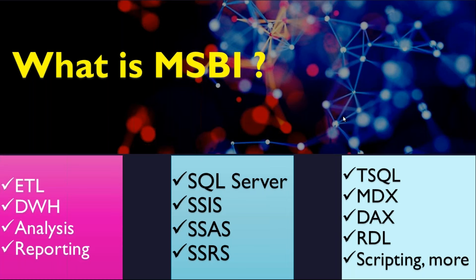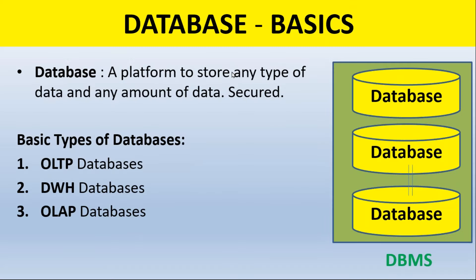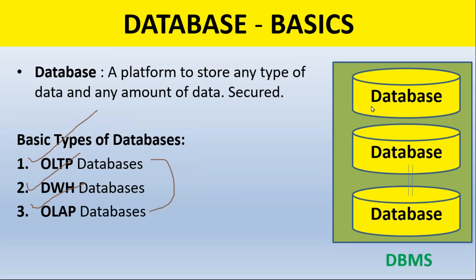Now, in reality, to understand more about the actual course, we need to first start with a database — a platform to store any type of data, any amount of data, fully secured. There are three basic types of databases: live data storage OLTP, historical data storage warehouse, and aggregated analytical data storage OLAP — Online Analytical Processing database. Our course includes all three: OLTP first with SQL basics, then data warehouse, and finally OLAP concepts, one by one.